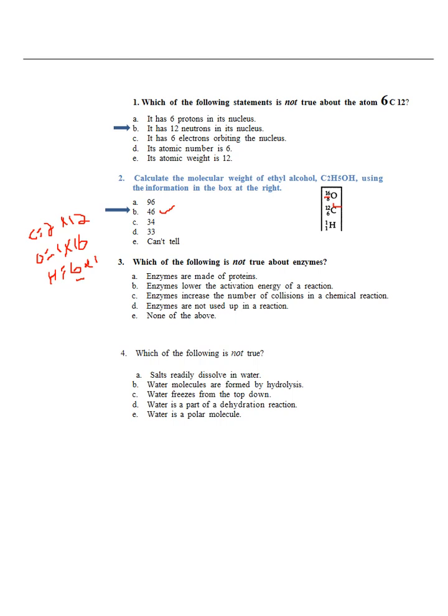Question three: Which of the following is not true about enzymes? The best answer is C: Enzymes increase the number of collisions in a chemical reaction. It is not true. Question four: Which of the following is not true? The best answer is B: Water molecules are formed by hydrolysis. It is not true.